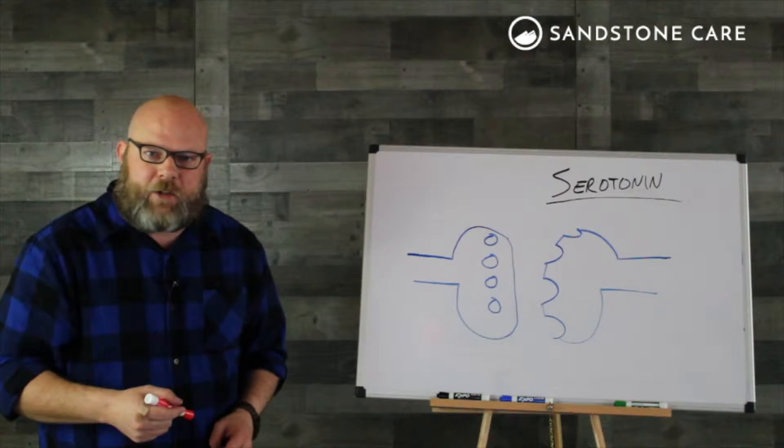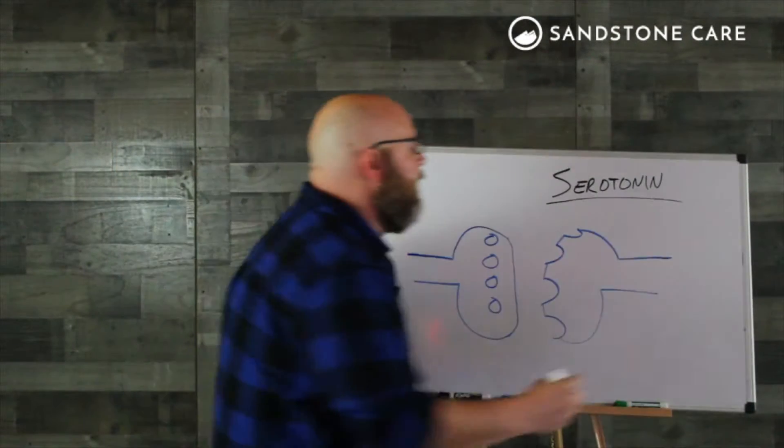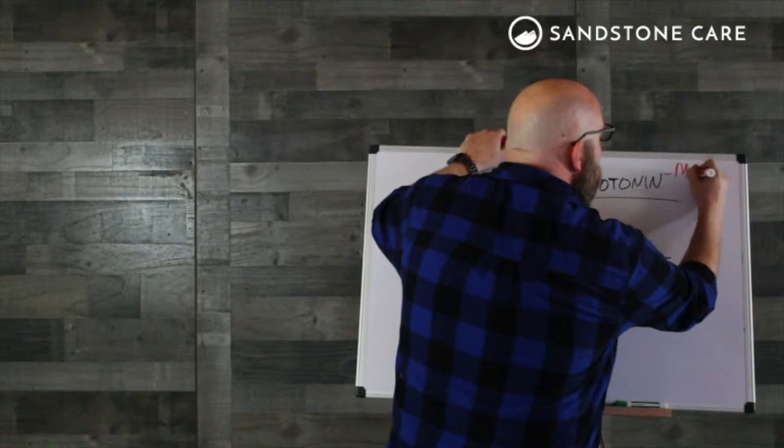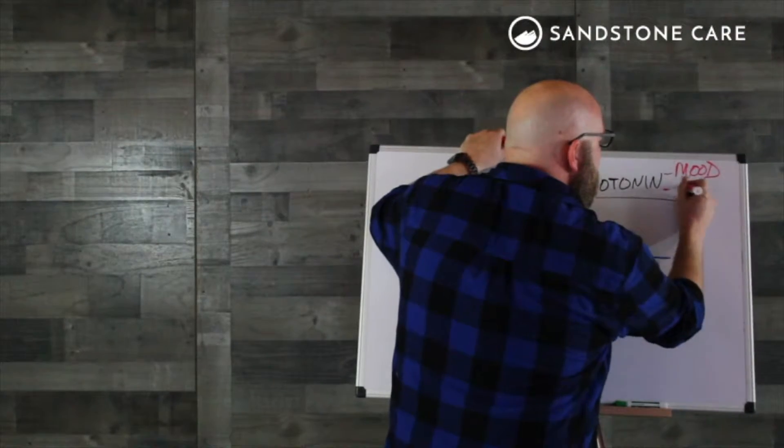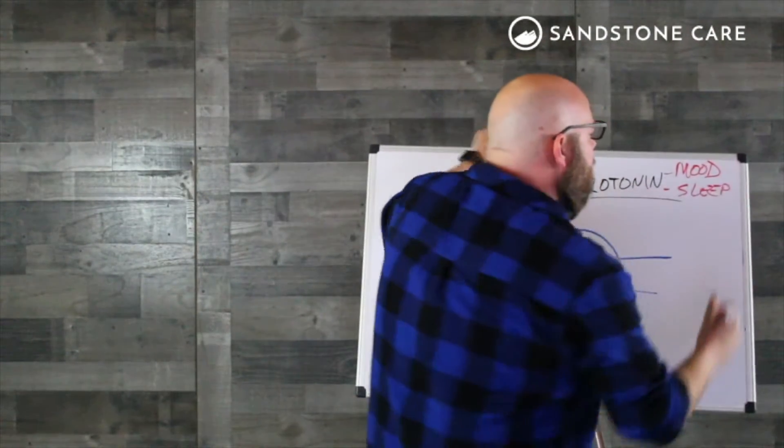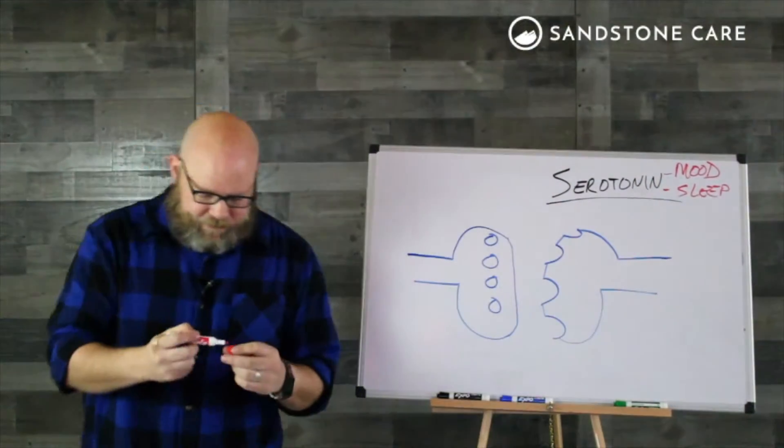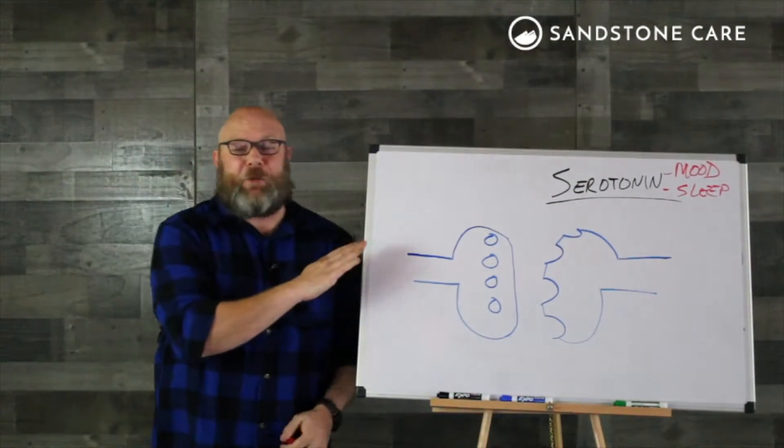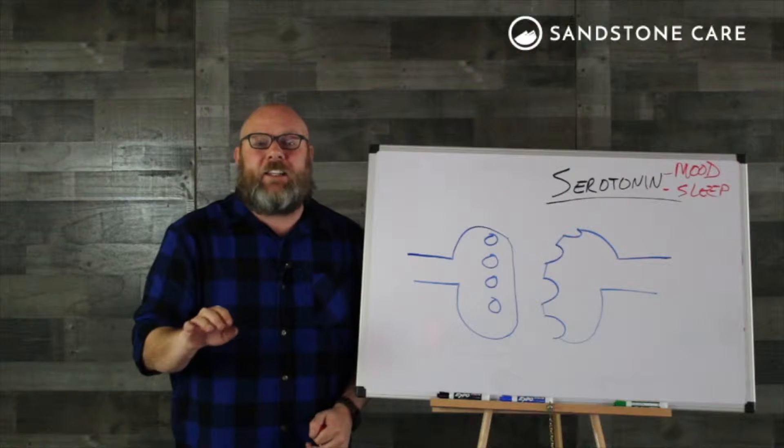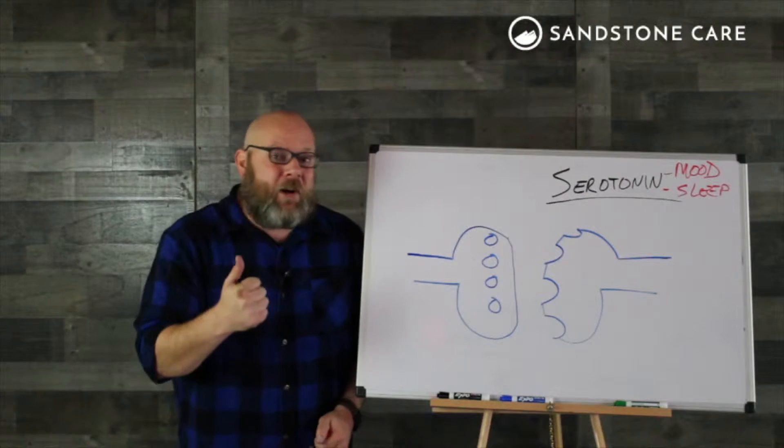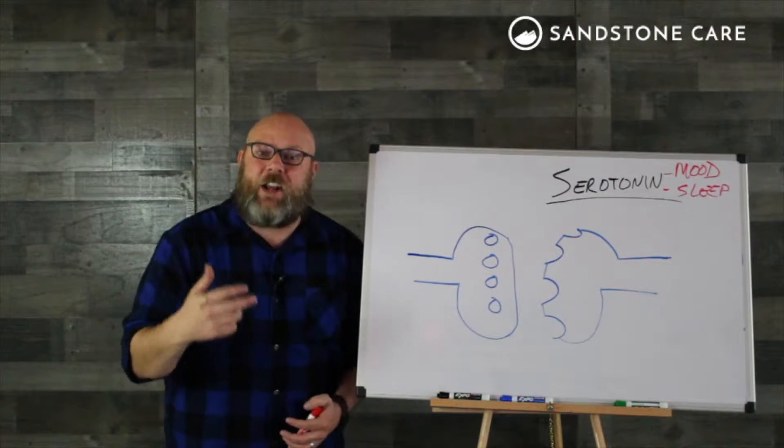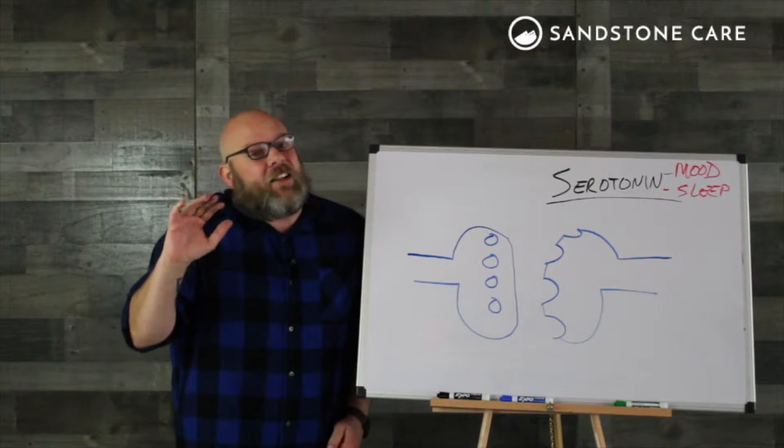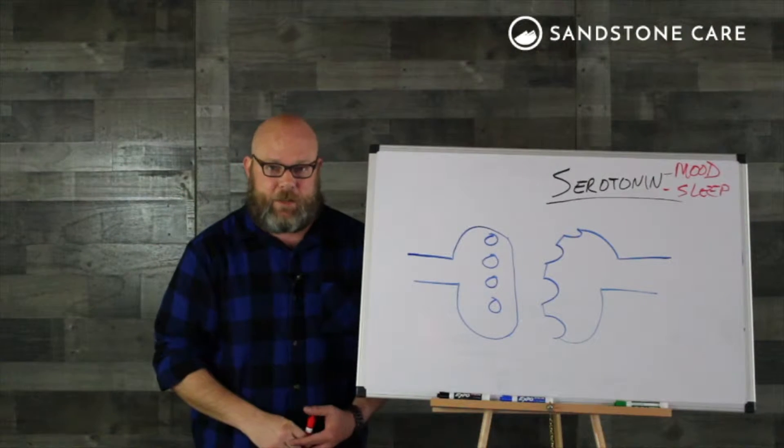Serotonin is the brain chemical that helps regulate mood and sleep. It helps regulate sleep cycles. Serotonin really regulates a whole lot of things. It regulates our hunger response and our need for social interaction and our sex drive. It regulates a lot of things, but today we're just going to talk about mood and sleep.